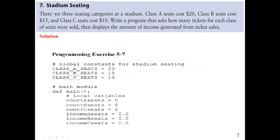The next problem says there are three seating categories at a stadium. Class A seat costs $20, Class B seat costs $15, and Class C seat costs $10. Write a program that asks how many tickets for each class of seat were sold, then display the amount of income generated from the ticket sales. This problem can also be solved without using the main function or a user-defined function.